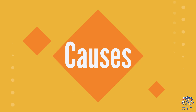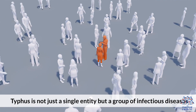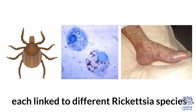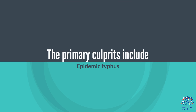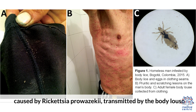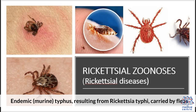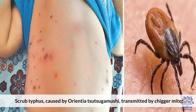Typhus is not just a single entity, but a group of infectious diseases, each linked to different Rickettsia species. The primary culprits include Epidemic typhus, caused by Rickettsia prowazekii, transmitted by the body louse. Endemic murine typhus, resulting from Rickettsia typhi, carried by fleas. Scrub typhus, caused by Orientia tsutsugamushi, transmitted by chigger mites.